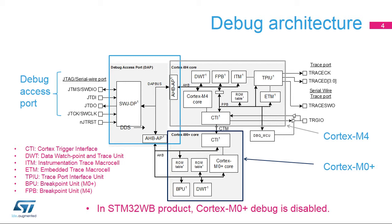The Cortex-M4 core includes the processor and associated trace and debug units: DWT, FPB, ITM, ETM, TPIU, and CTI. In addition, there are system debug features including the Cross-Trigger Matrix, or CTM.